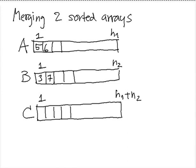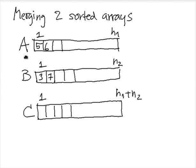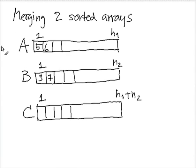So you have two arrays, A and B. These are sorted arrays, and A has N1 elements and B has N2 elements. And they are sorted, and you want to merge them into array C.